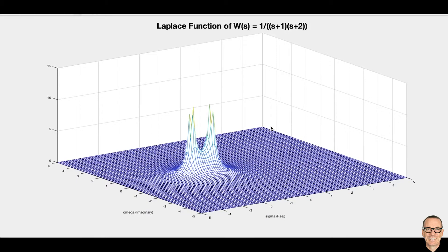We're going to talk about the Laplace transform and how to visualize it. We're going to use this example to start with, with a function W(s) which has this form. And you can clearly see here there are two poles, one at s equals minus one and the other at s equals minus two.